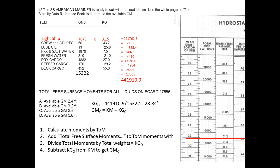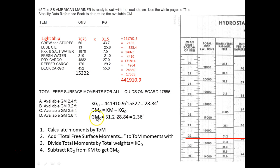A displacement of 15,322 falls right around this line in the hydrostatic table, and it turns out that KM is going to be about 31.2. The next closest value is 31.3, so it's not critical. GMO equals KM of 31.2 minus KGO of 28.84, which means our final GM accounting for free surface is 2.36 feet. That is the solution to this problem.